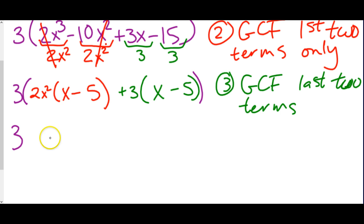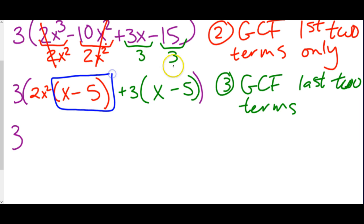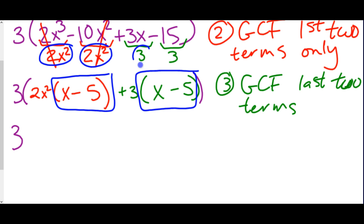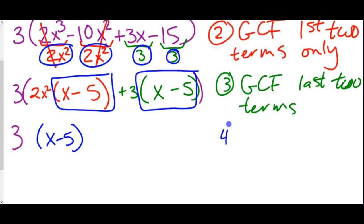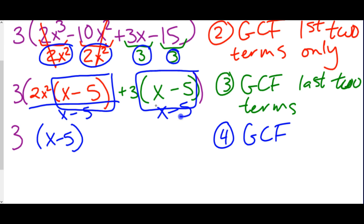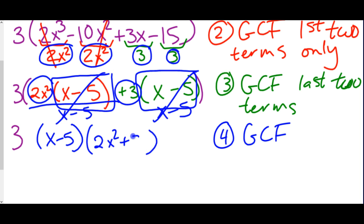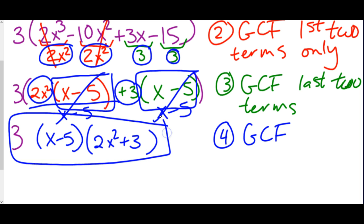That 3 at the very beginning is just going to stay part of the problem. Now we have to figure out what this turns into. You may notice we have two matching parentheses — (x - 5) appears in both groups. x minus 5 is actually a greatest common factor. We divide both by (x - 5) — that matched expression goes out front, and those cancel out because (x-5)÷(x-5) = 1. We're left with 2x² + 3, giving us 3(x - 5)(2x² + 3) as our final answer.